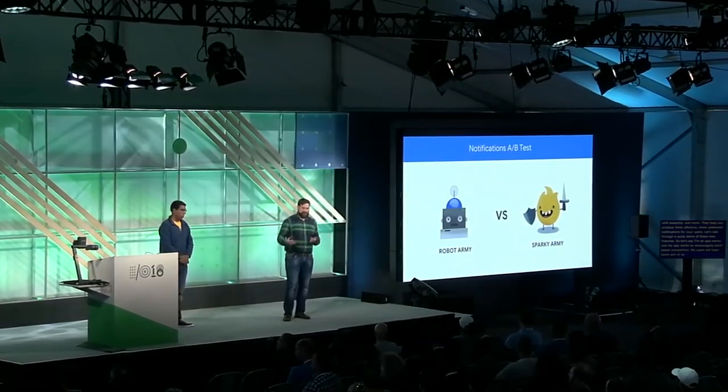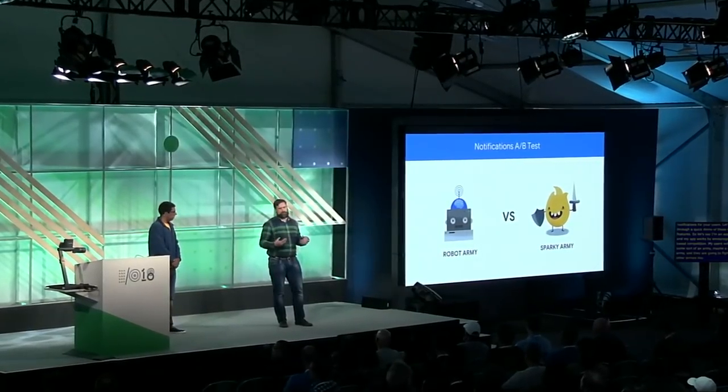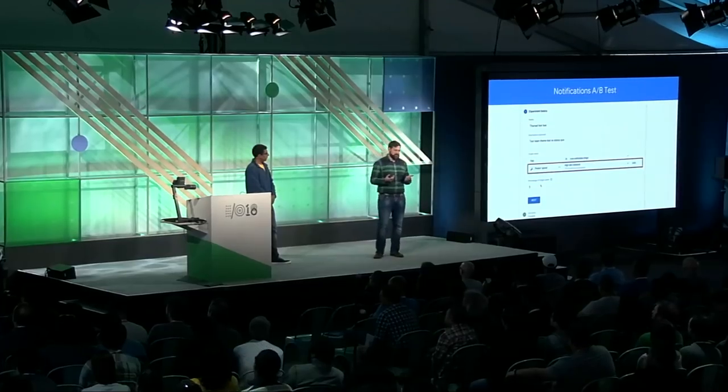Let's say I'm an app owner and my app works by encouraging team-based competition. My users will have some sort of army — maybe a robot army — and they're going to fight against other armies like the Sparky army. Each team competes to get to the top of the leaderboard. They can buy upgrades to their army with a premium currency called BattleBucks. I like to send notifications to my users to bring them back into the game, and I'm particularly interested in sending notifications to my paying users. I have a theory that sending a message that appeals to team loyalty is going to be the best approach, and I want to build an A/B test to test that theory.